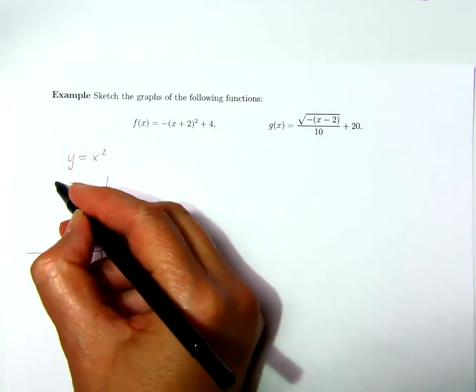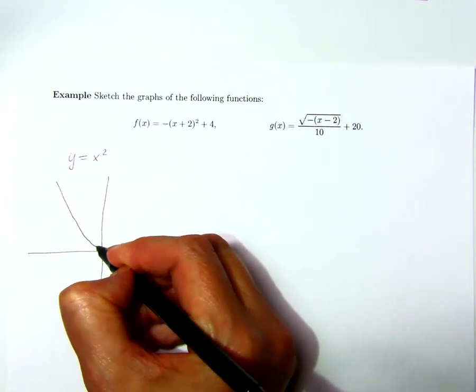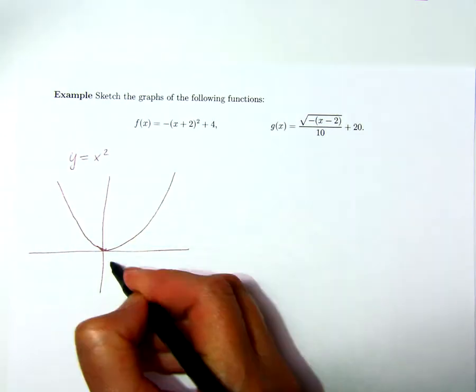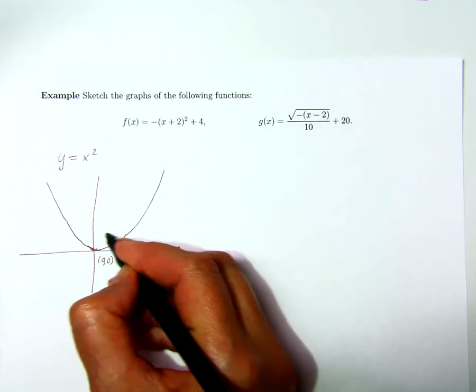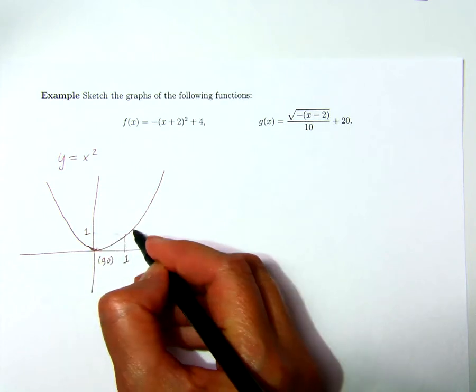So we know this is a basic parabola, y equals x squared. Point zero zero is on there, and I'm going to add another point, or keep track of what happens. Another point, the point one one.